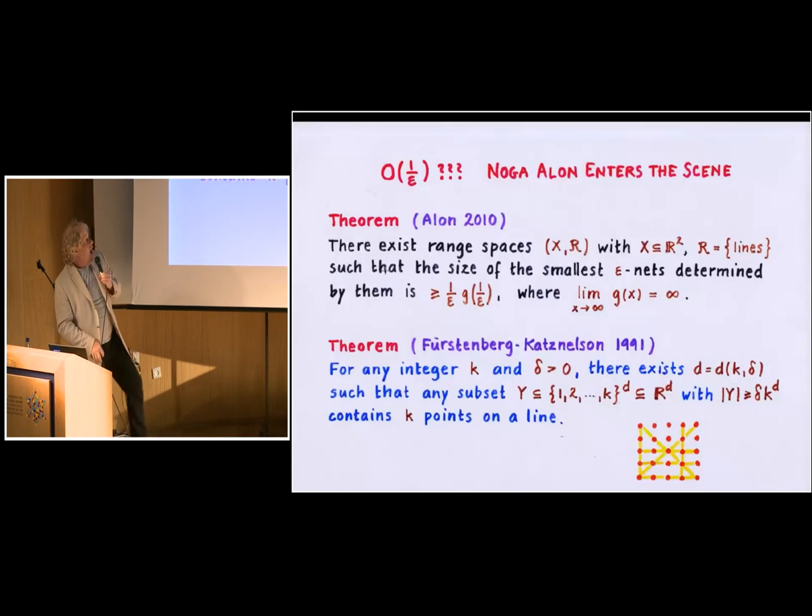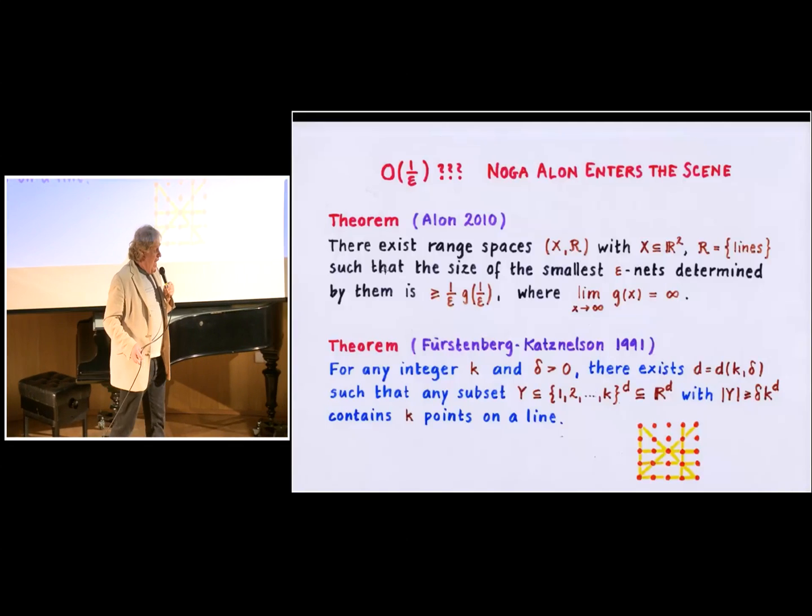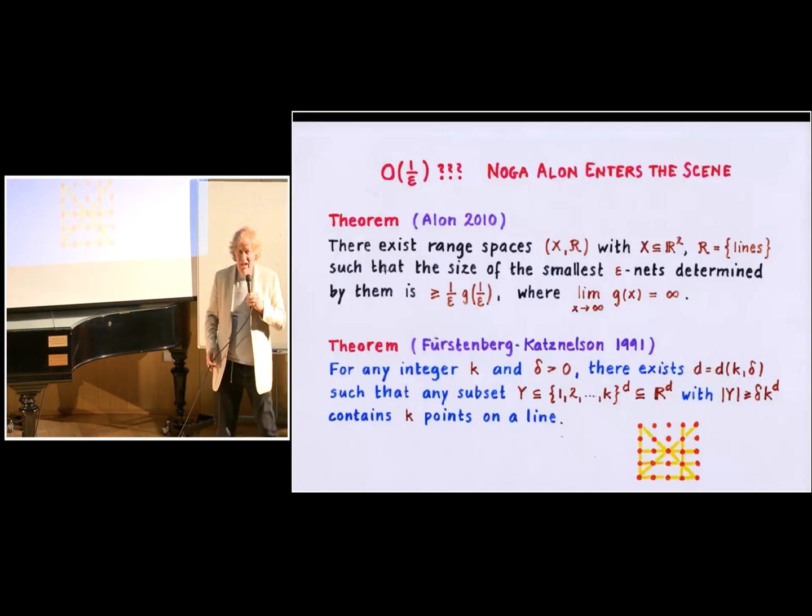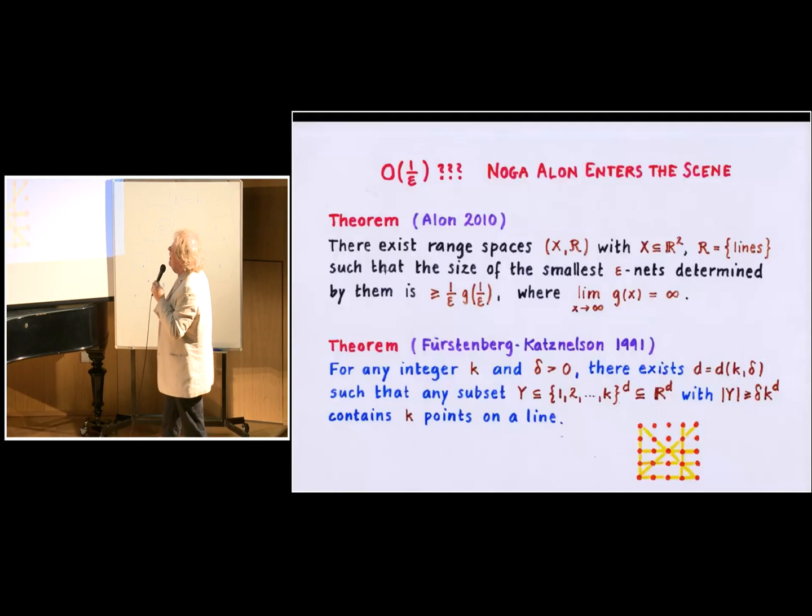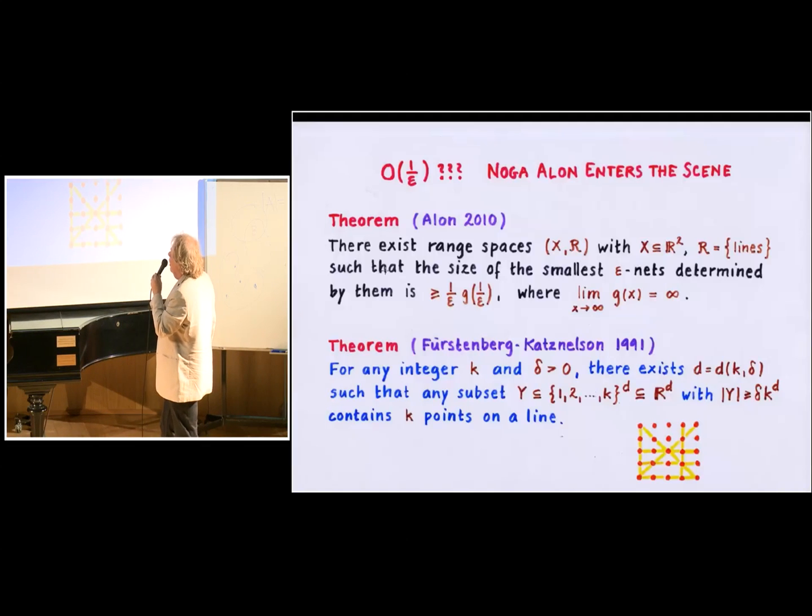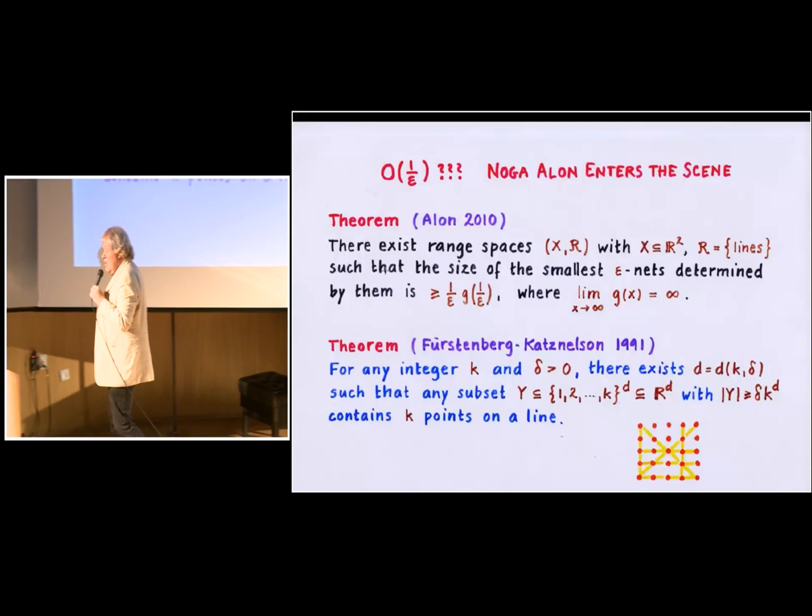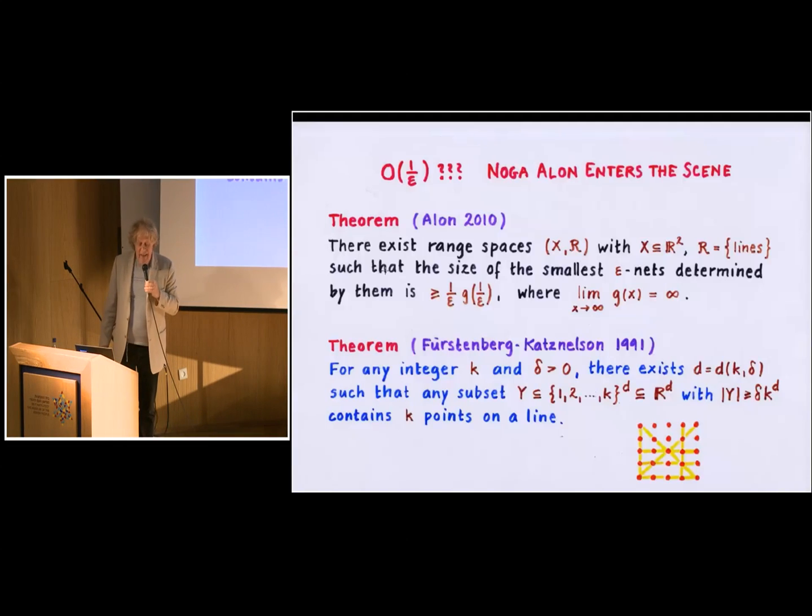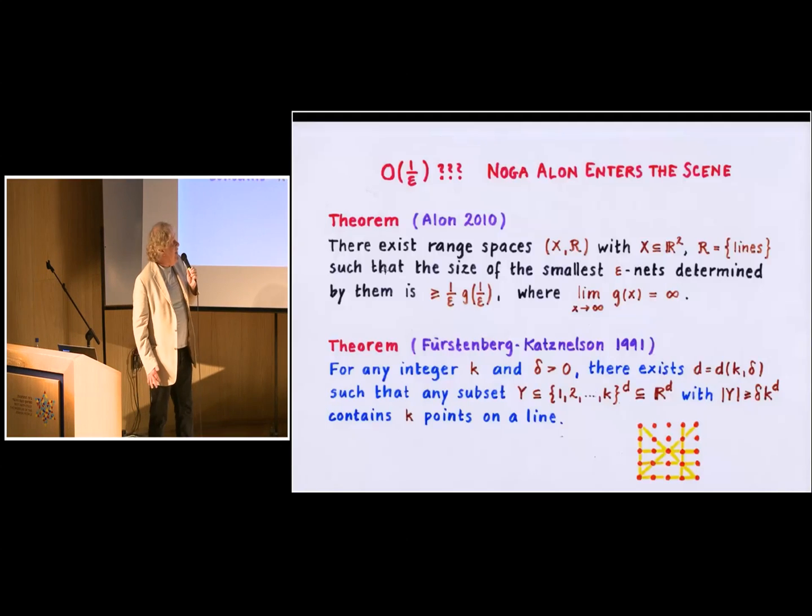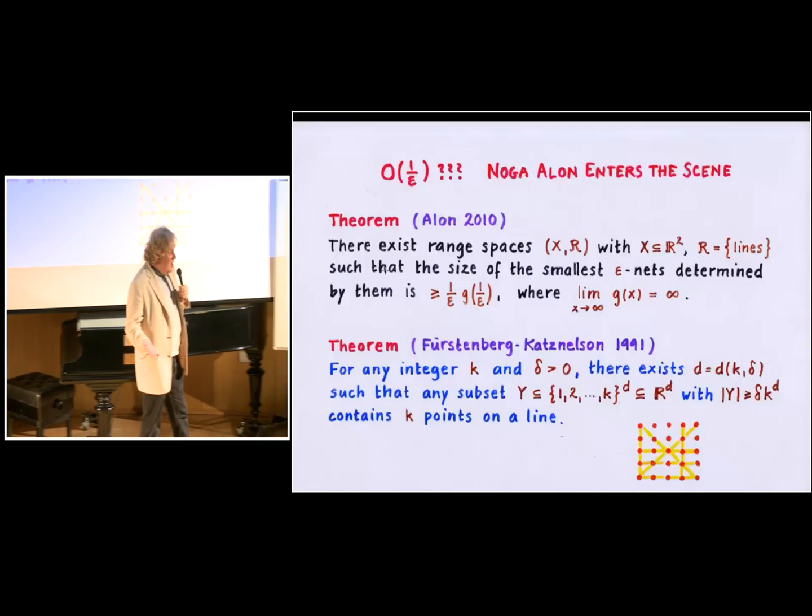And there were more general statements in this direction that gave evidence that this might be the case. And then, of course, Noga Alon enters the scene, and in 2010, he surprised everybody by shattering these dreams, so he actually proved that there is no linear upper bound. One over epsilon is even in geometric examples. This cannot be an upper bound. And he exhibited very simple geometrically defined range spaces that require epsilon nets of size more than one over epsilon times any constant.